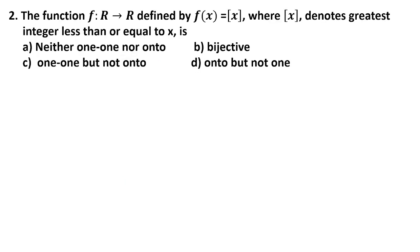Question number 2: A function f(x) is the greatest integer function, and we have to check its nature — whether it is neither one-one nor onto, one-one but not onto, onto but not one-one, or bijective. Most of you know the answer directly, but let us check how to do it for a two-mark question.